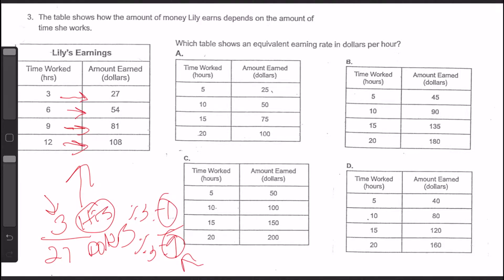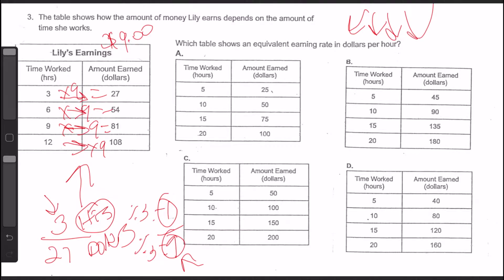We can verify: three times nine is 27, six times nine is 54, nine times nine is 81, and 12 times nine is 108. So Lily is making $9 an hour. Now we're going to look at the other tables and see which one shows an equivalent earning rate to the $9 an hour she's making.